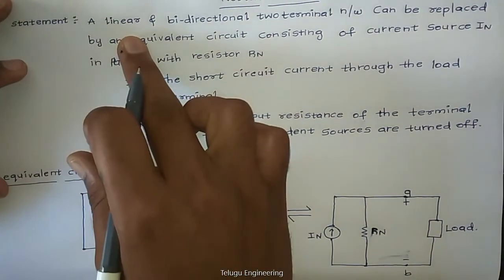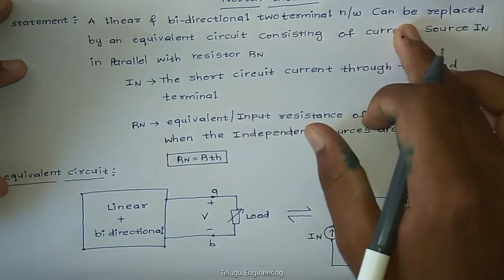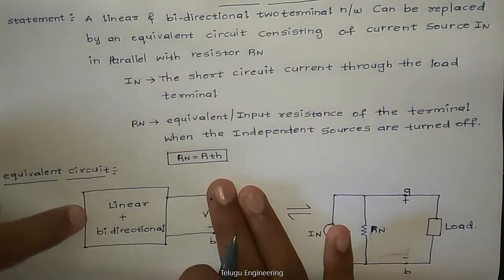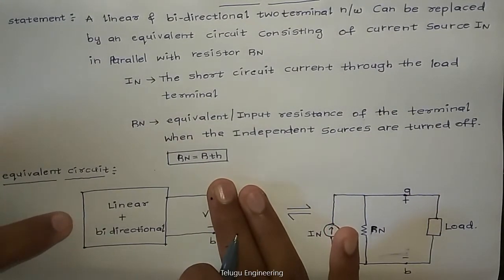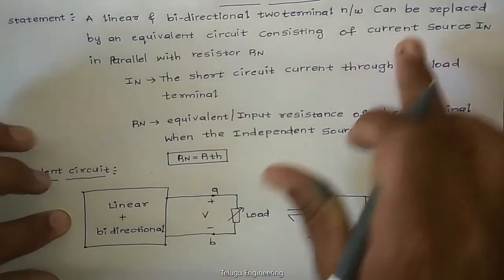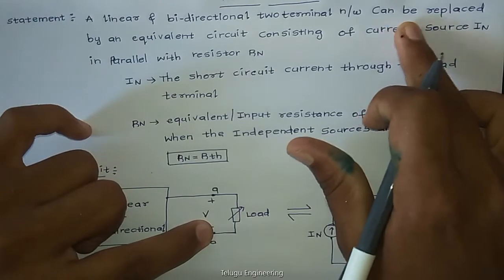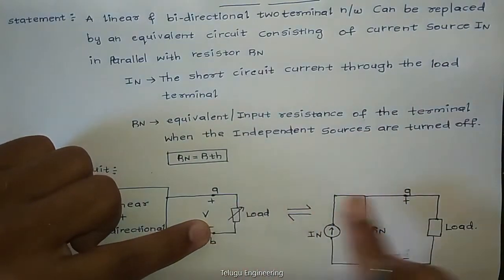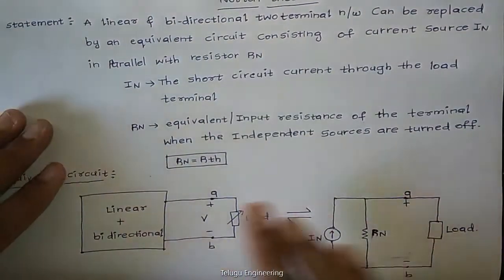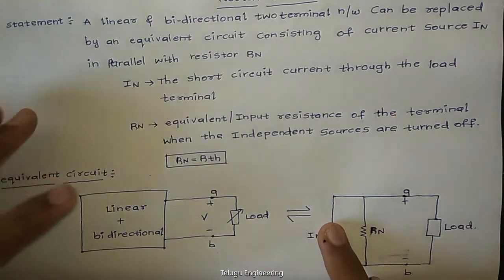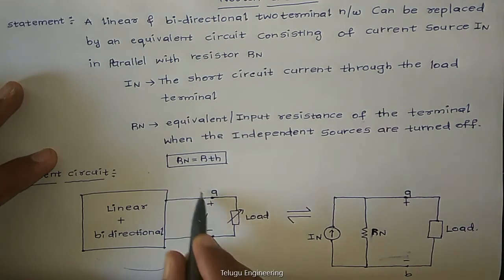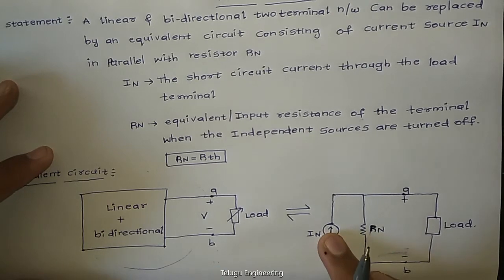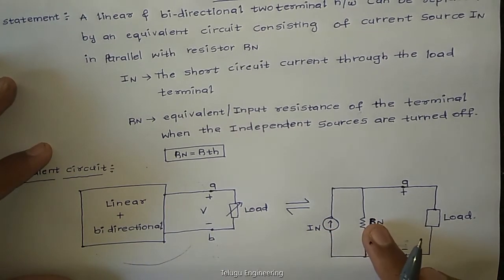The statement: a linear and bidirectional two-terminal network — a linear, bidirectional, and complex network with voltage sources, current sources, and resistors, inductors, and so on — with two terminals A and B, can be replaced by an equivalent circuit consisting of a current source IN in parallel with resistance known as Rn.